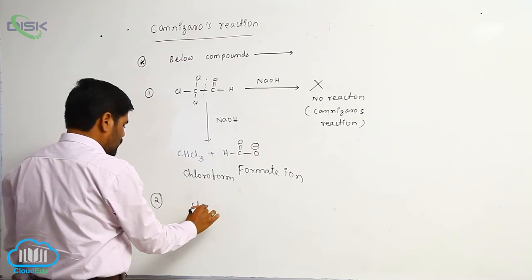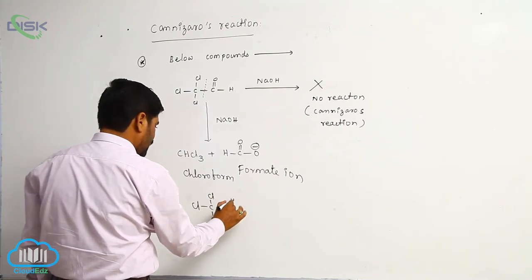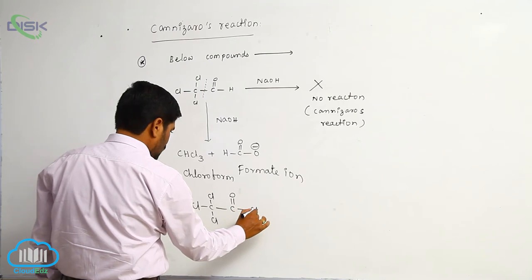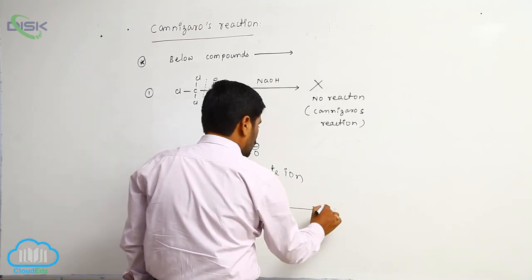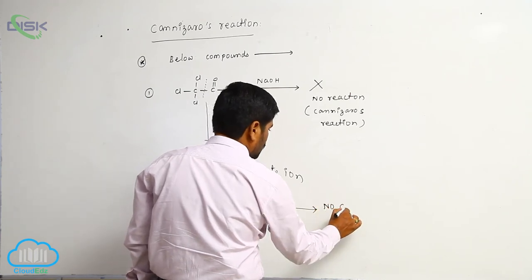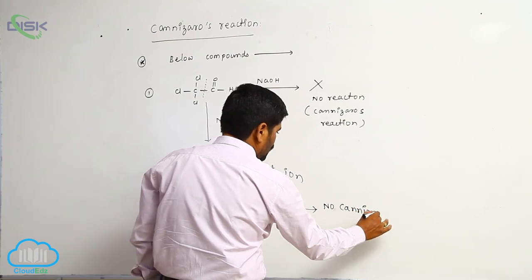Second one: trichloroacetone. CCl3, here is also Cl, then C double bond O, here is CH3. No Cannizzaro reaction.